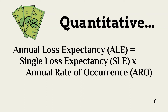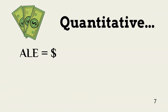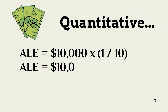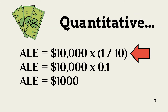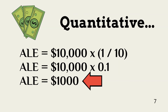The SLE value is the expected loss from one incident. The ARO is how often the organization expects an incident to occur. For example, if an incident is expected to occur every five years, the ARO is 0.2. In this example, the SLE is $10,000, and the expected frequency of incident occurrence is every 10 years. Dividing one by 10 gives us an ARO of 0.1. Multiplying the SLE by the ARO provides an annual loss expectancy of $1,000.